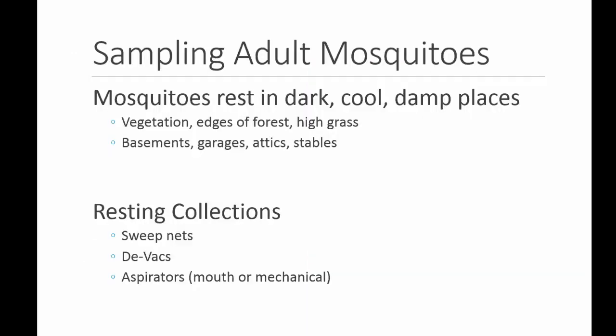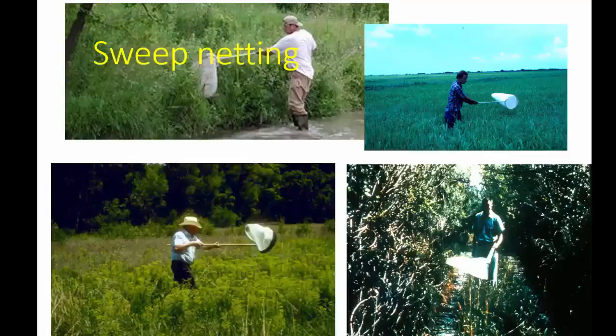Mosquitoes rest in dark, damp, cool places such as vegetation, the edges of the forest, in high grass, in garages, attics, stables, and basements. To collect from these areas, you might try one of two or three options. There are a number of different sweep nets available. You can use a vacuum type piece of equipment, and then there are also multiple different types of aspirators. Here's an example of sweep netting — simply walking through an area and sweeping with an insect net to determine what insects are present. Here's an example of a backpack mounted vacuum for collecting mosquitoes.